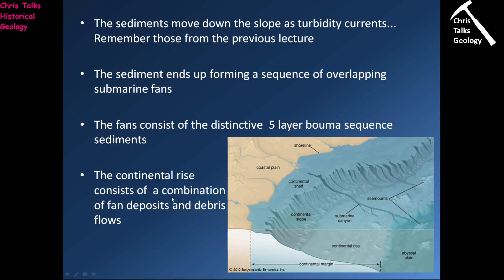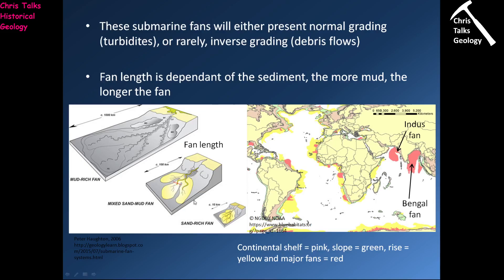We have a mixture of both turbidite deposits and underwater landslide deposits. The turbidites produce submarine fans, and we know that these submarine fans will show normal grading. Looking at the Bouma sequence, you have very sand-rich material at the bottom, which grades through silts to clays — the top layer is dominated by clays. So you have an upward-fining sequence.